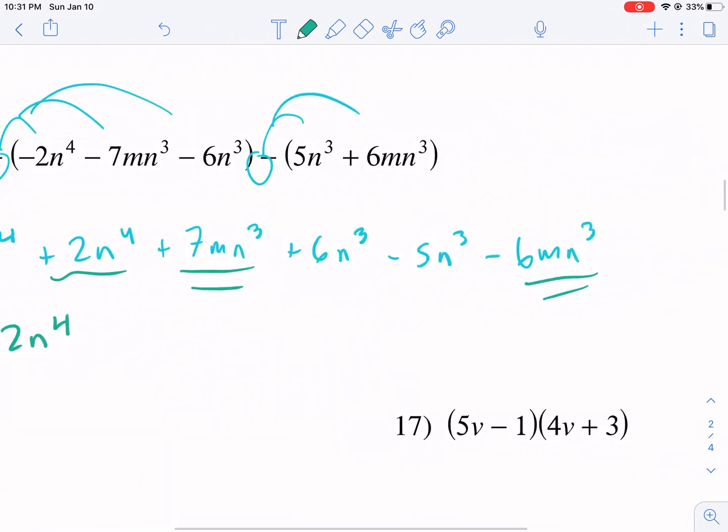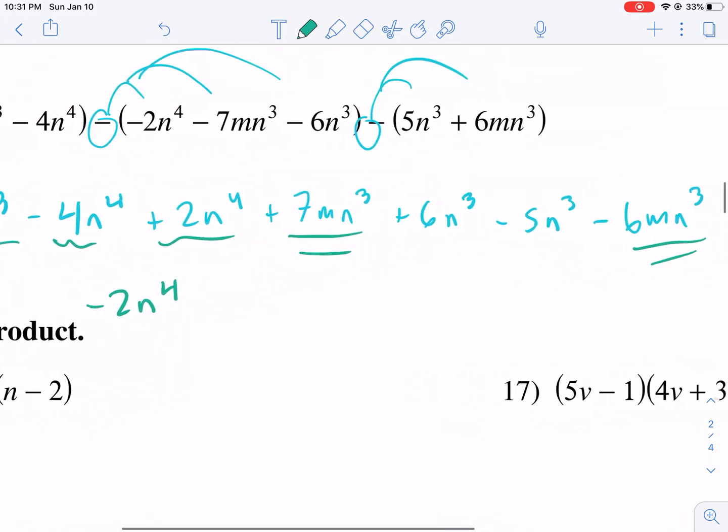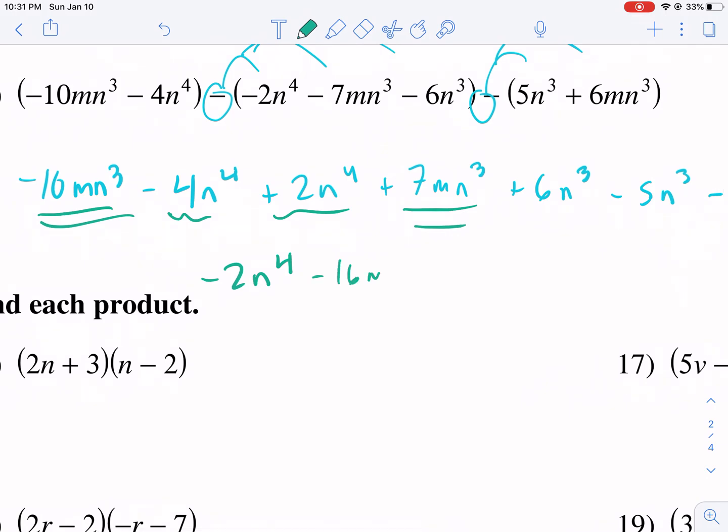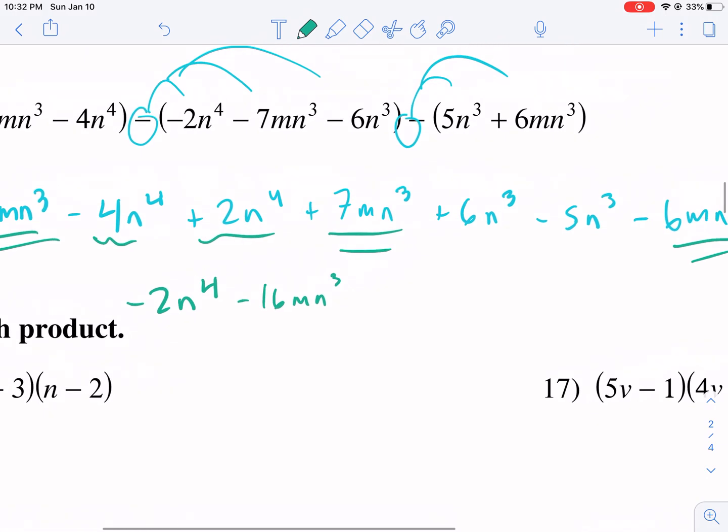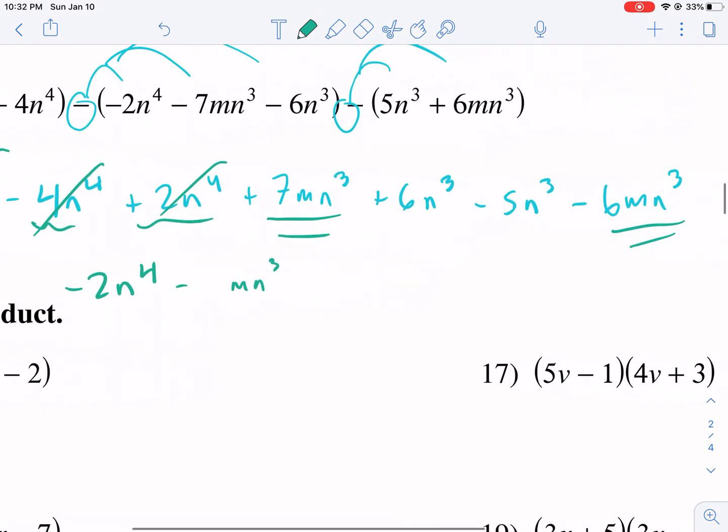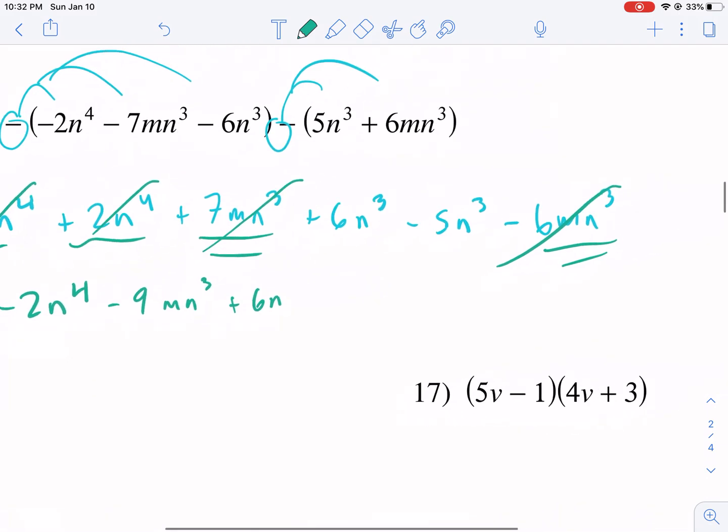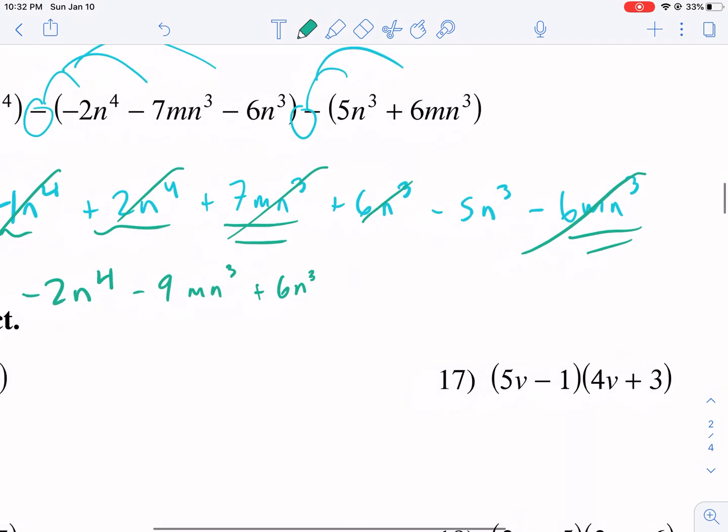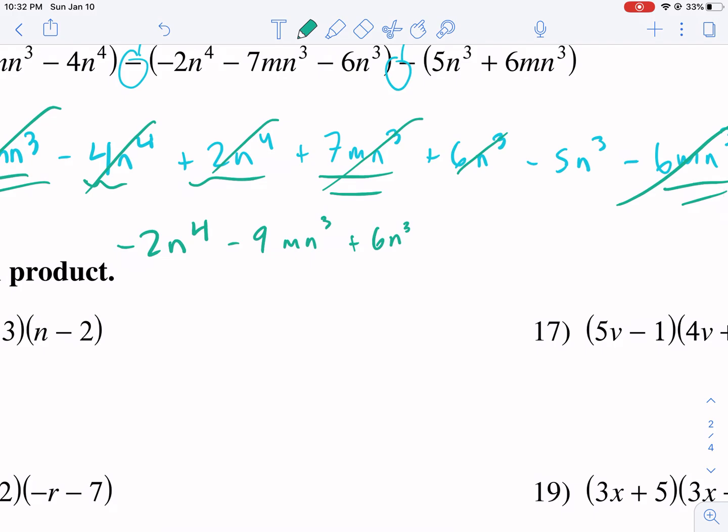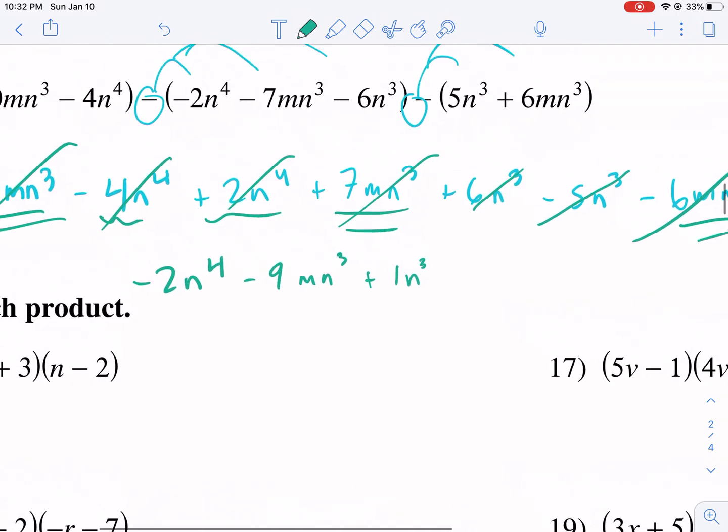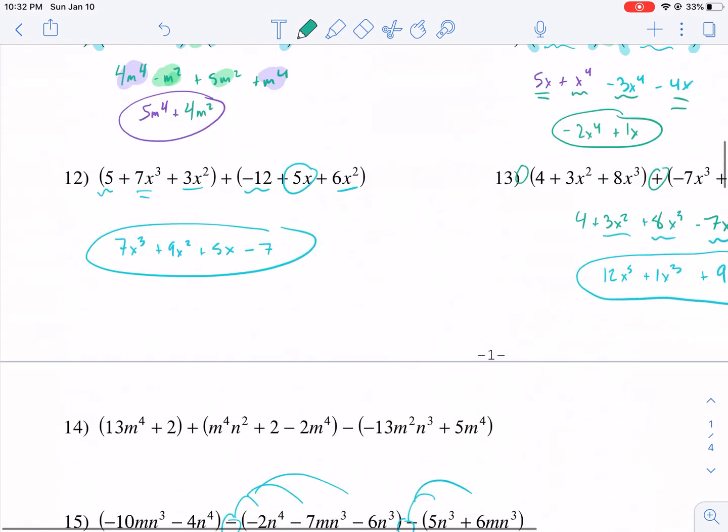So we're going to underline these. Now our highest power is technically that fourth. So we're going to start there. We have negative 4n to the fourth plus 2n to the fourth. I should have underlined those. My apologies. I didn't see any other n to the fourths at the moment. So they're right next to each other. Negative 2n to the fourth. Now we have n to the thirds. I'm going to go ahead and do the mn to the thirds first. So we have negative 16mn to the third. Oh, no, we don't. We have that plus seven.